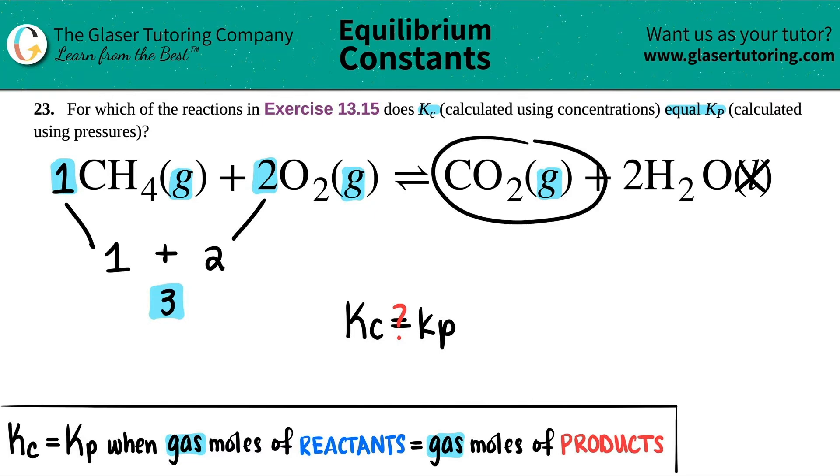Coming over to my product side, I just see I have CO2. I don't have a number in front. That means I have one of them. And I can't use this because that's not a gas. So I'm just going to drop down the one. So I have one total mole on the product side.